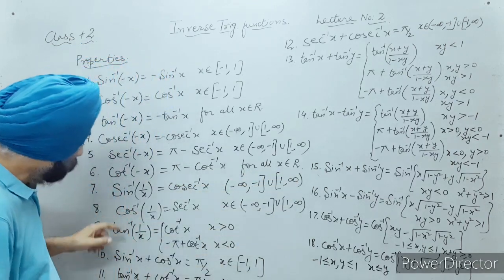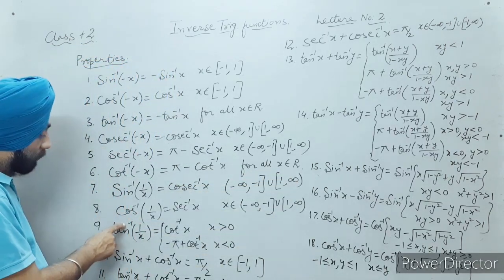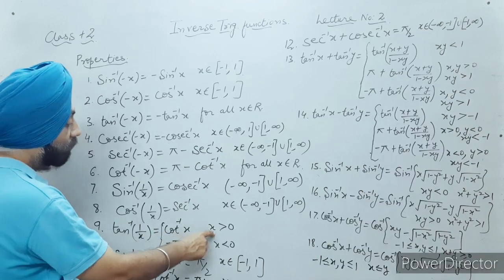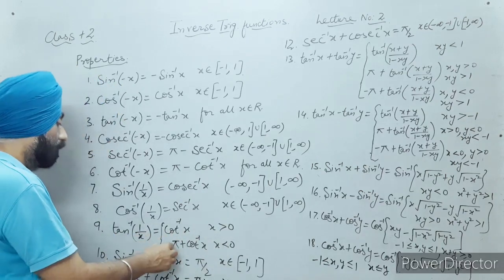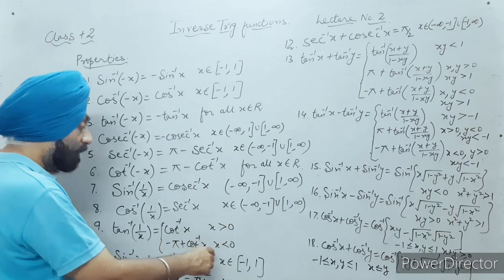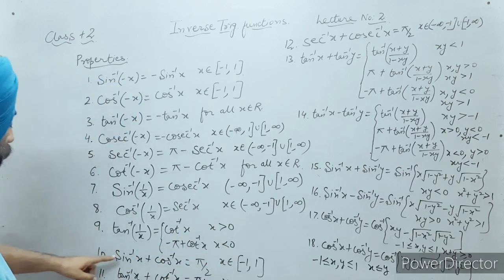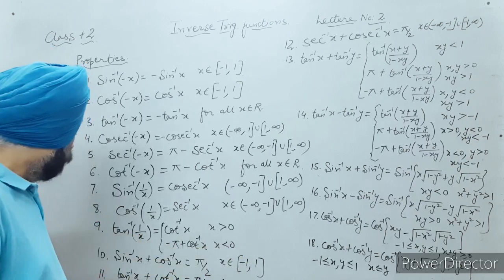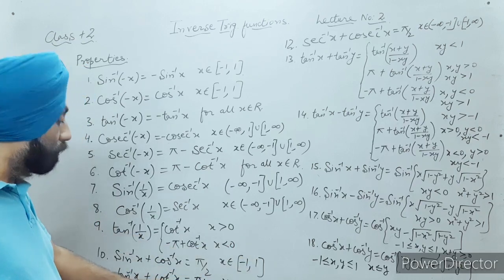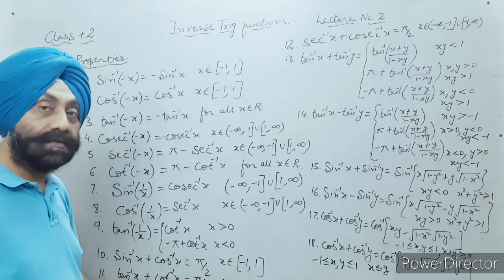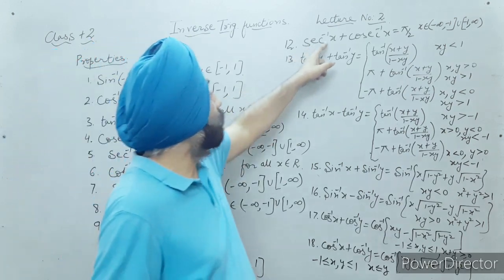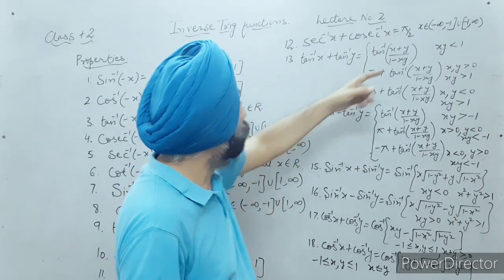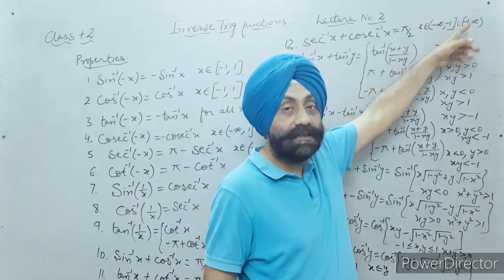This is a very important property: tan inverse of one by x equals cot inverse x if x is greater than zero, and equals negative pi plus cot inverse x if x is less than zero. Similarly, sine inverse x plus cos inverse x equals pi by 2, where x belongs to minus one to one. Tan inverse x plus cot inverse x equals pi by 2 for x belonging to the real numbers. Secant inverse x plus cosecant inverse x equals pi by 2, where x belongs to minus infinity to minus one union one to infinity.